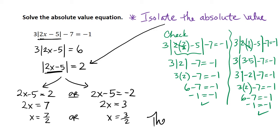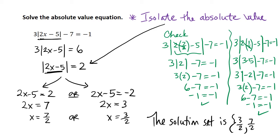Both of those solutions check, so we again have a solution set that contains two values. The solution set is {3 halves, 7 halves}. You can write either one first or second — traditionally in mathematics we write the smaller number first.